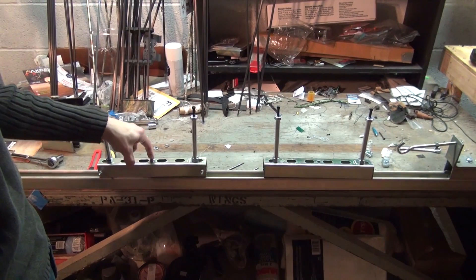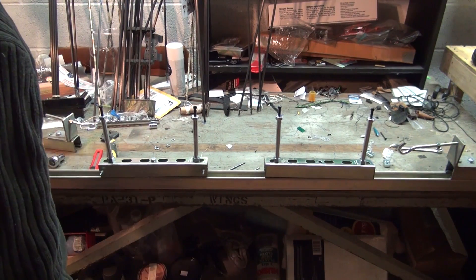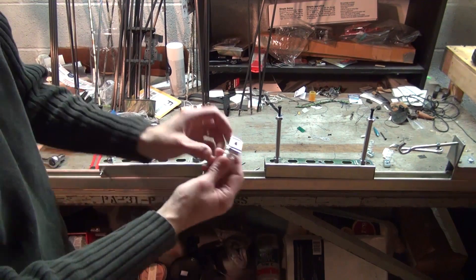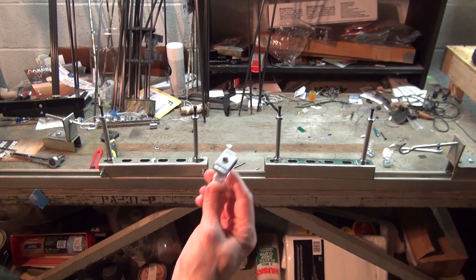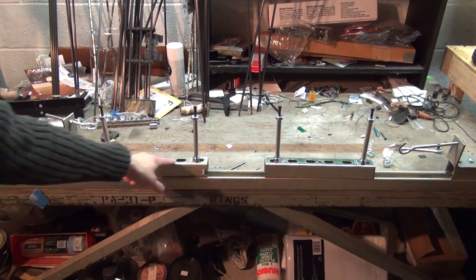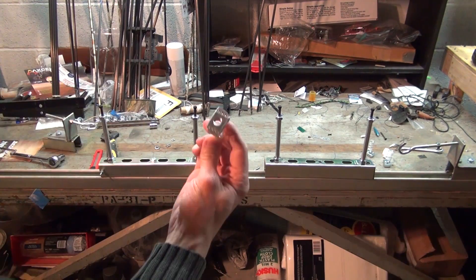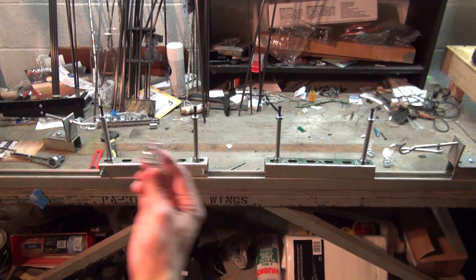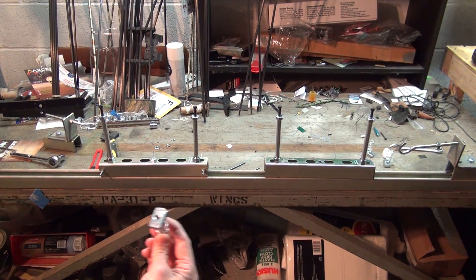When you're making a string you start off with a bolt going down through into the unistrut. You have this little nut end there and the bolt that's in the middle of this string arm goes down and screws into that, and these can be moved anywhere along the unistrut so you can easily change your string length.